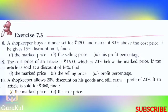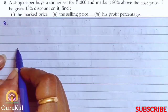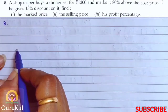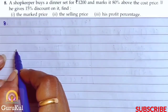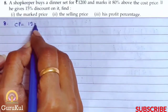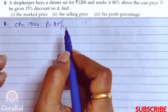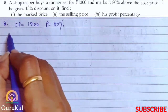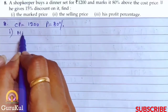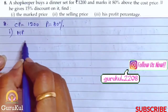Today I am going to start with part 3 of exercise 7.3, question number 8. A shopkeeper buys a dinner set for Rs. 1200 and marks it 80% above the cost price. So cost price is 1200 and profit marked is 80%. We need to find the mark price, which is 80% of the cost price.